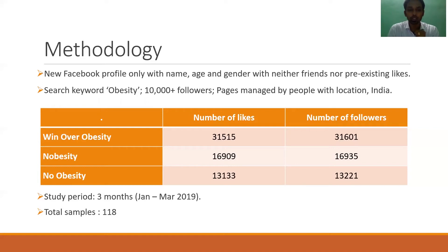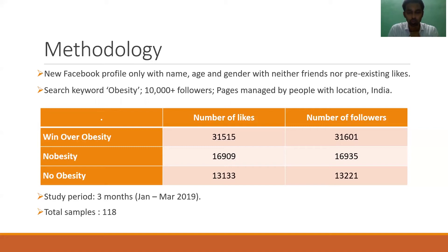When searched with the keyword 'obesity,' a total of 105 pages were listed. From these, we shortlisted pages with 10,000 and above followers, excluded pages not in English, and chose only pages managed by people with the location India. The final shortlisted pages were: Win Over Obesity, No Obesity, and No Obesity. From the chosen pages, posts were analyzed for the study period of 3 months from January to March 2019. A total of 118 sample posts were collected and analyzed.